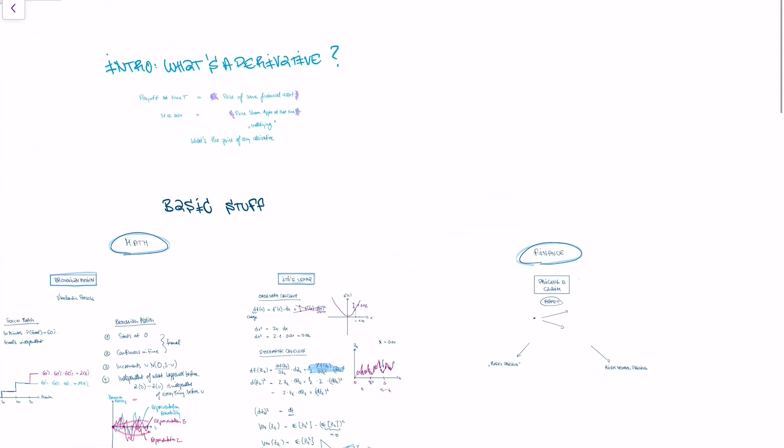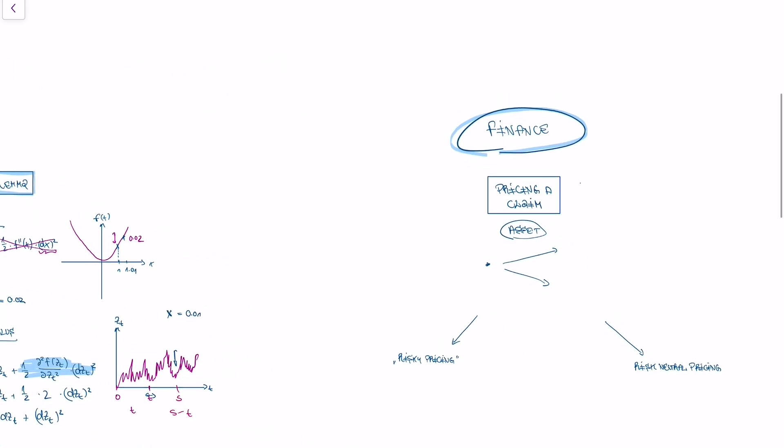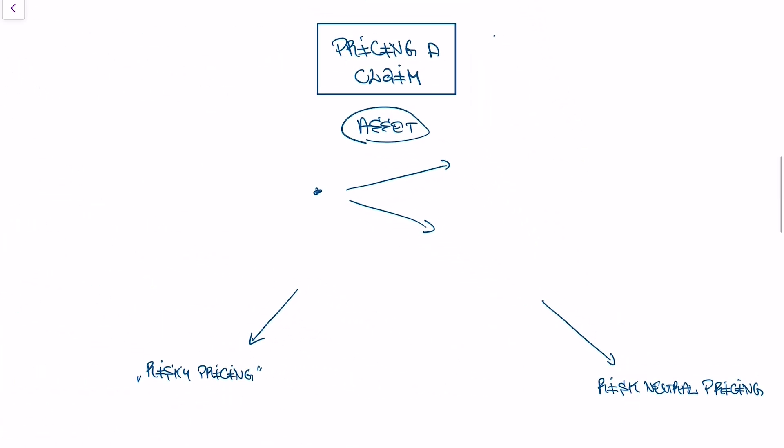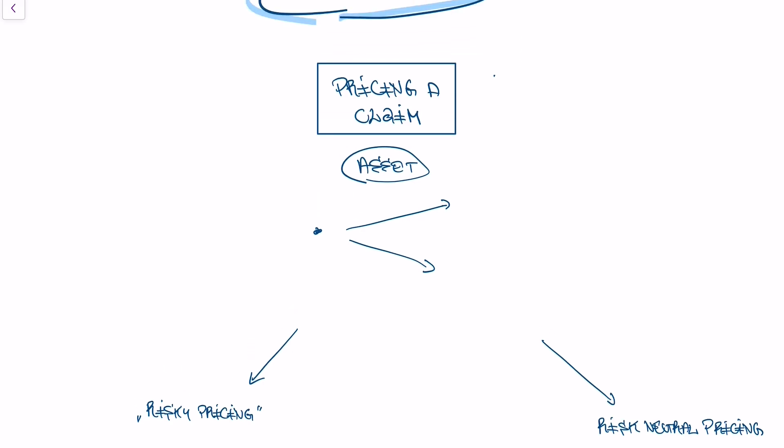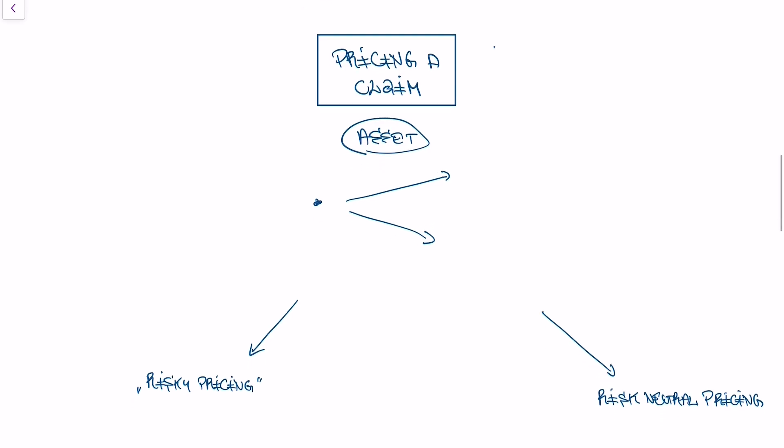We're in our series on the Black-Scholes model and we need to understand some basic stuff. I've talked about math, now I'm talking about basic finance definitions. We need to talk about how to price a claim, how to understand what a certain claim or asset is worth. I have a simple example here.